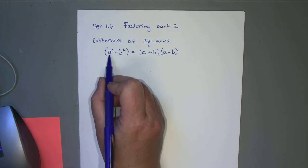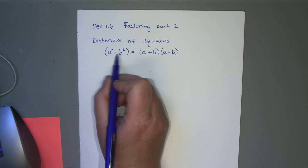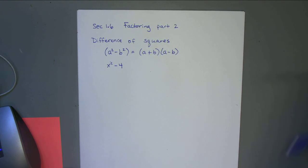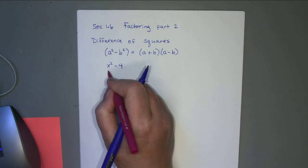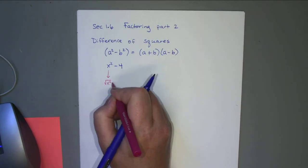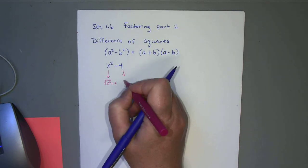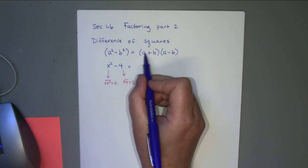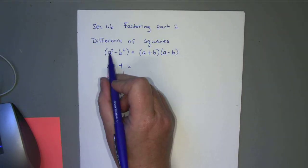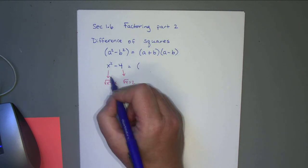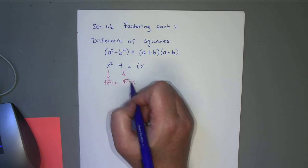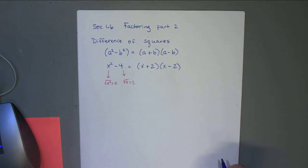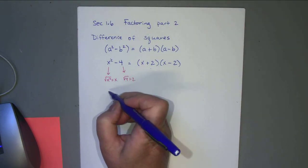Basically, if you've got two things that you can take the square root of — two things that are squared — like x² minus 4. You can take the square root of x² and get x, and the square root of 4 and get 2. Then you write them as the square-rooted values with a plus sign in between, and the same two with a minus sign in between. So this works for anything of that form.